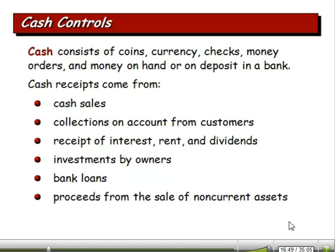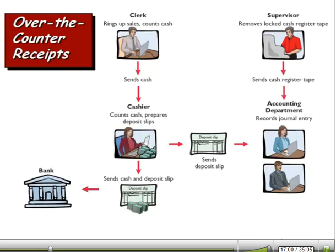Cash comes from cash sales, collections on account from customers, interest, rent, dividends received, owner investments, proceeds from bank loans, proceeds from sale of non-current assets, and refund checks. For over-the-counter receipts, a clerk rings up sales and counts cash. At the end of the shift, they close out the cash register and send the cash to the cashier. The cashier counts the money, prepares a deposit ticket, and sends the cash and deposit ticket to the bank, while a copy of the deposit slip goes to the accounting department.